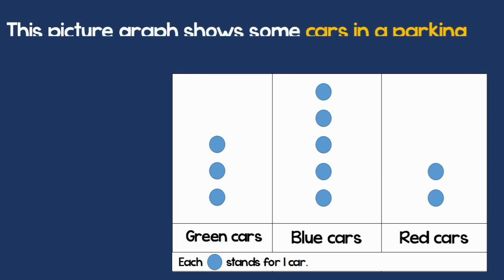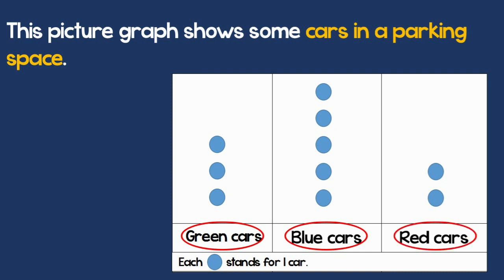This picture graph shows some cars in a parking space. There are some green cars, some blue cars, and some red cars.